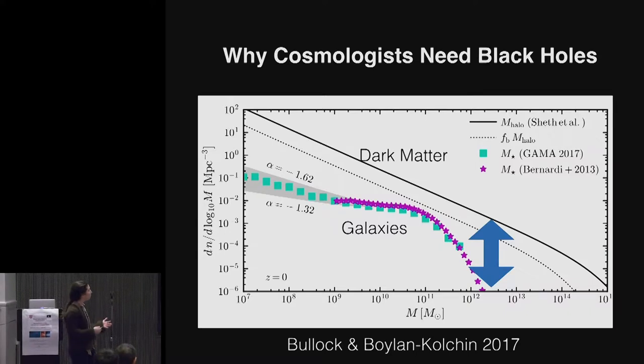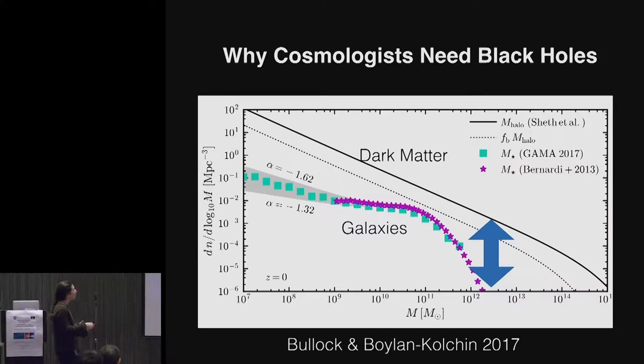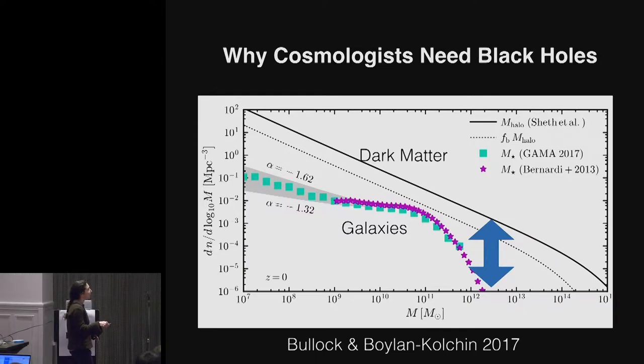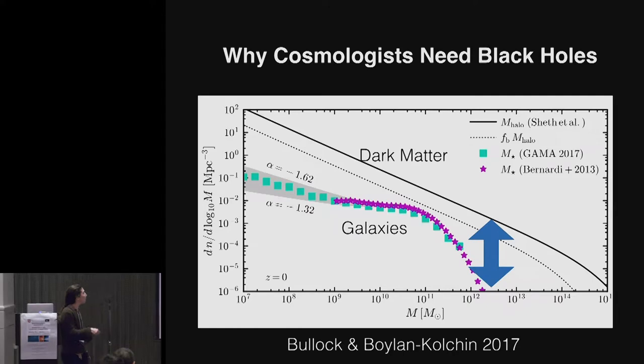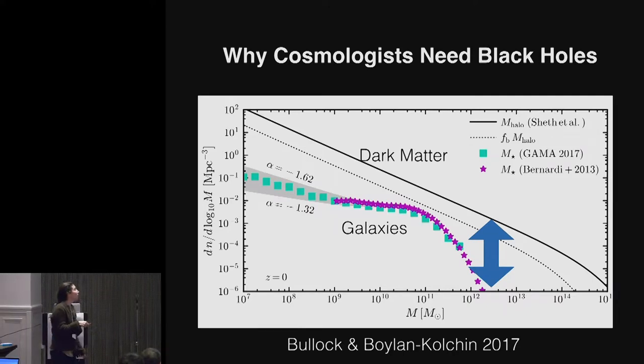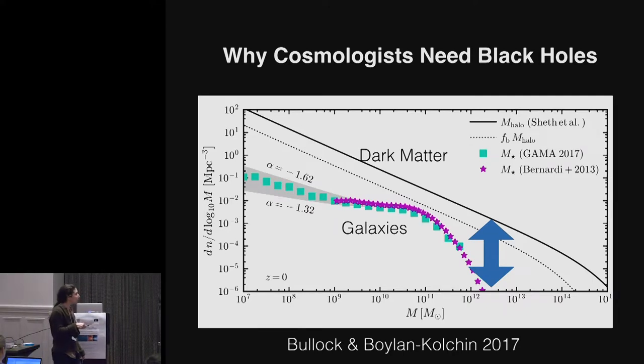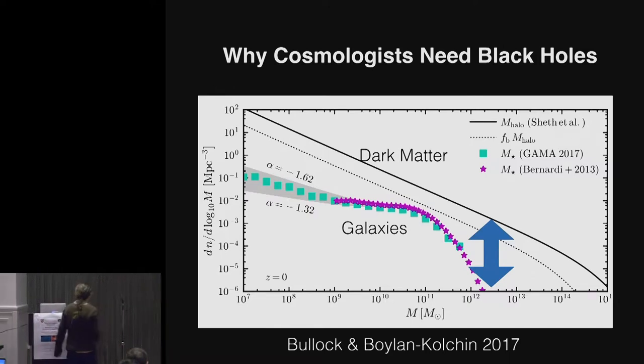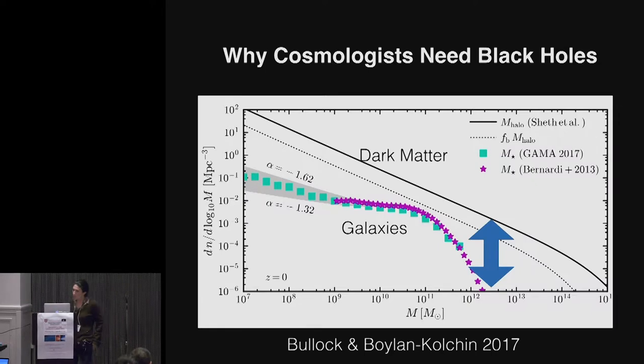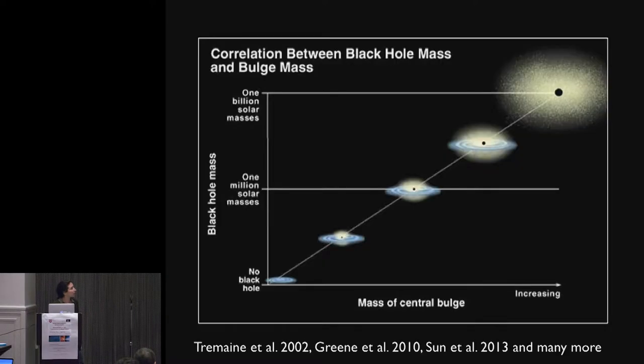And cosmologists have had a tremendously hard time stopping big galaxies from growing at late times because there's actually lots of gas in the universe that makes stars. And what they have found themselves invoking time and time again is the energy from accretion onto supermassive black holes.